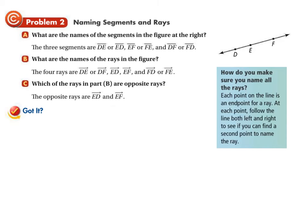For problem 2A, what are the names of the segments in the figure? Starting at end point D, you can go to E or to F. Segment DE can also be called segment ED — same set of points. You could also have segment EF or segment FE, and segment DF or segment FD covering the entire length. So the unique segments are segment DE (or ED), segment EF (or FE), and segment DF (or FD). Writing both orders isn't helpful when naming unique segments since they refer to the same thing.